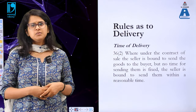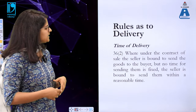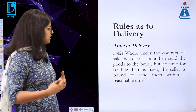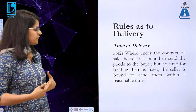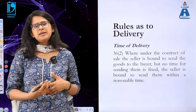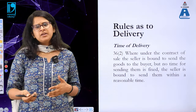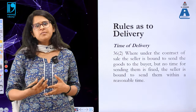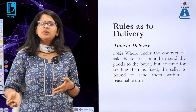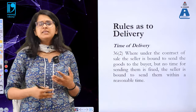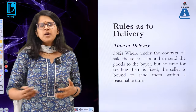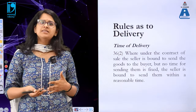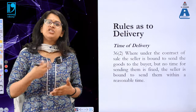Section 36 subsection 2 on time of delivery states: where the seller is bound to send the goods but no time has been fixed, the seller is bound to send them within a reasonable time. What is reasonable depends on the industry — for fast-moving consumer goods that are perishable, reasonable time means while the goods are fit for consumption; but in the mining industry, the delivery may even happen after six months. Reasonable time depends on both the industry and the nature of the goods.